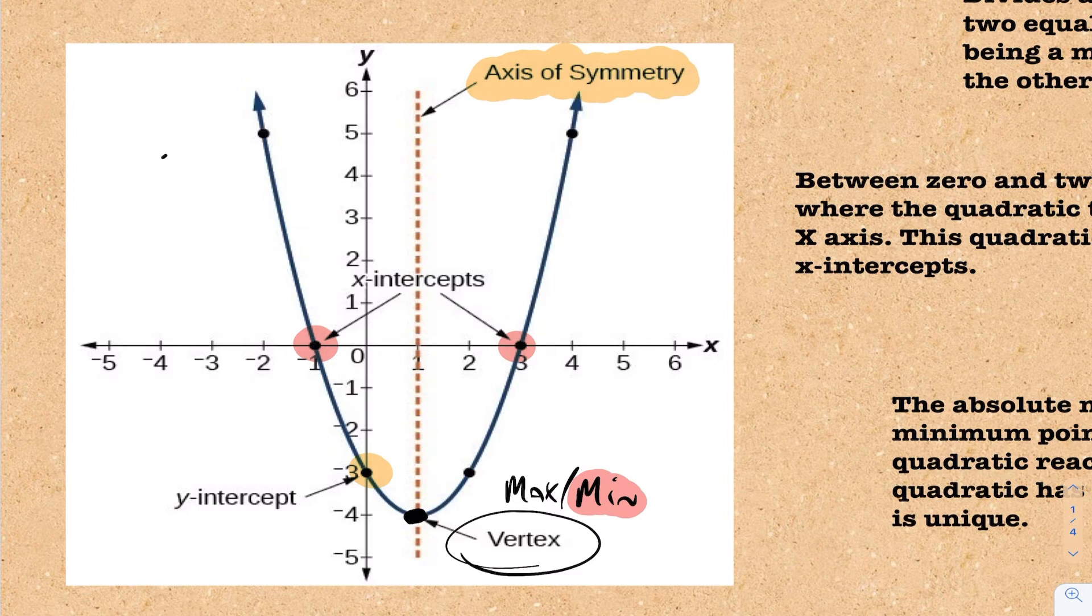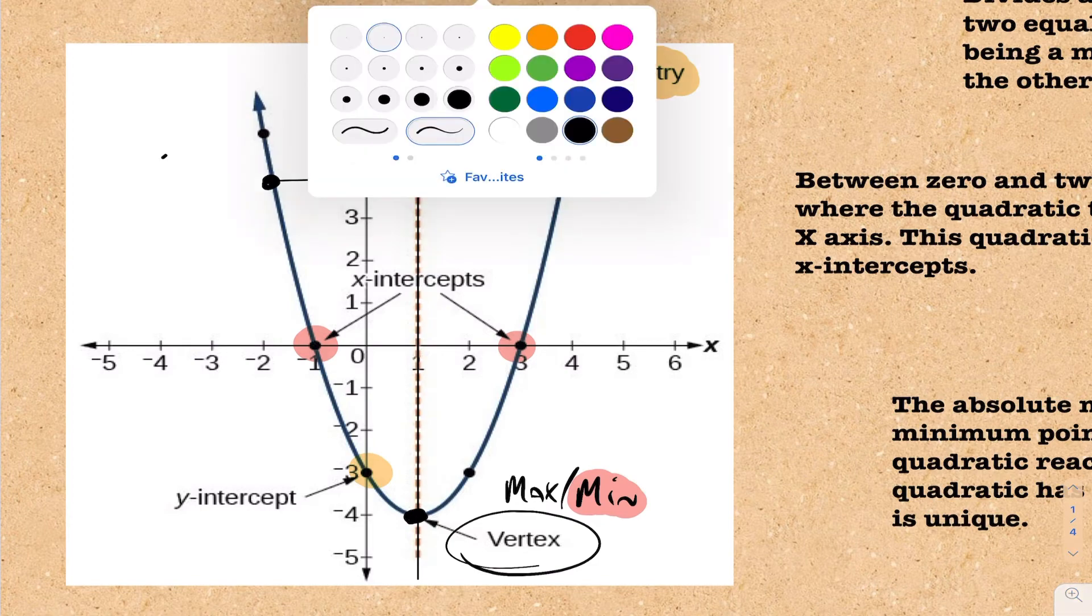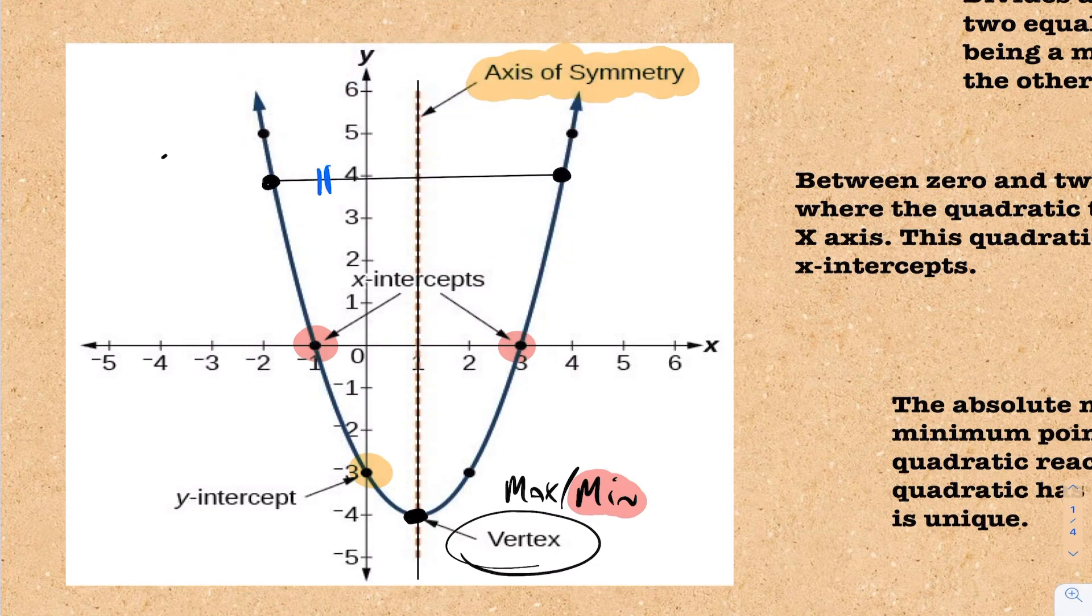a new term here that you wouldn't have seen with linear relations is this idea of axis of symmetry. Quadratics have an axis of symmetry. What the axis of symmetry is, it's a vertical line that's going to cut the quadratic into two equal pieces. And what that means is, if I pick any point in the quadratic and go to the opposite end, drawing myself a horizontal line, any point at all, and you go to the opposite end, it has to be a horizontal line. If you do that, the length from that point to the axis of symmetry, and from this point to the axis of symmetry are the same. And because they are the same, what you end up having is a perfectly symmetrical quadratic.